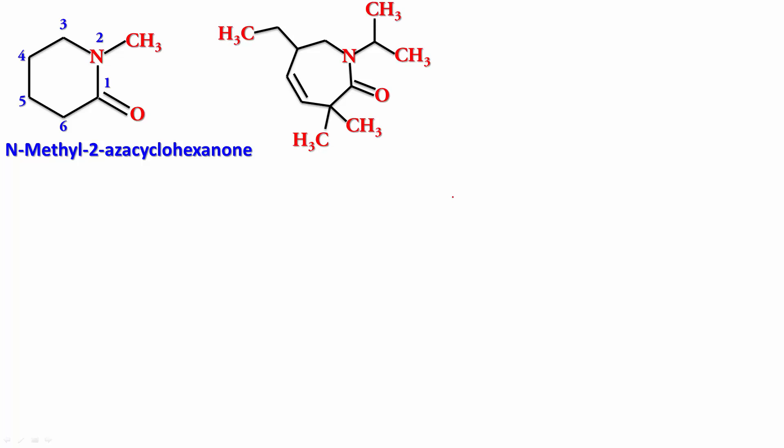Pause, name, play. The numbering is pretty simple - carbonyl carbon gets one, N gets two. What do we start the name with? We start the name with the alkyl group sitting on N. It's N-isopropyl-4-ethyl-7,7-dimethyl-2-azacycloheptanone.